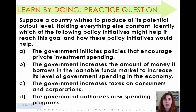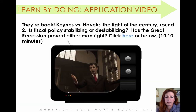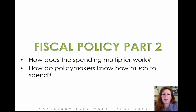Here's another practice question about the mechanics of fiscal policy. This is a great video — the second in the rap battle between John Maynard Keynes and Friedrich Hayek. The link is in the comments below. Next up is Fiscal Policy Part 2: how does the spending multiplier work, and how do policymakers know how much to spend?